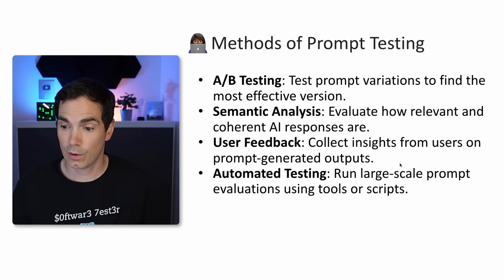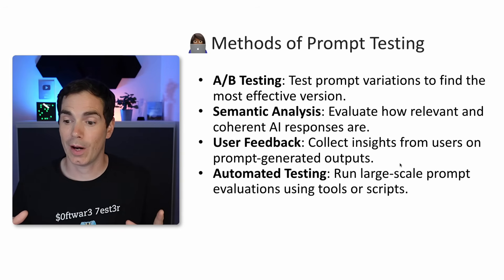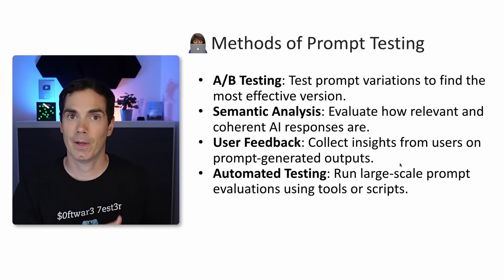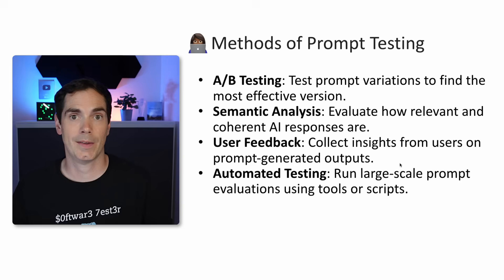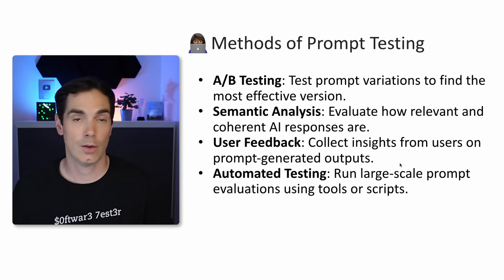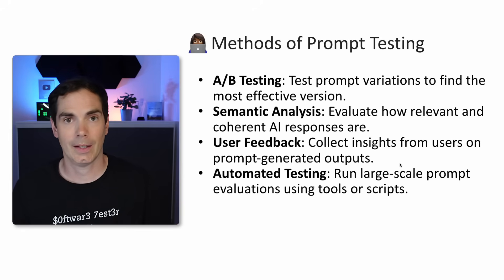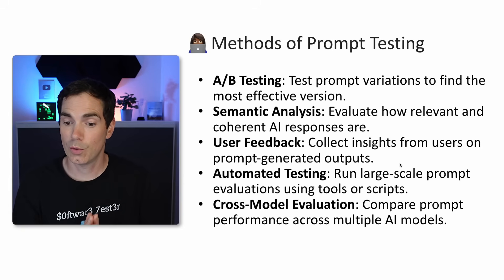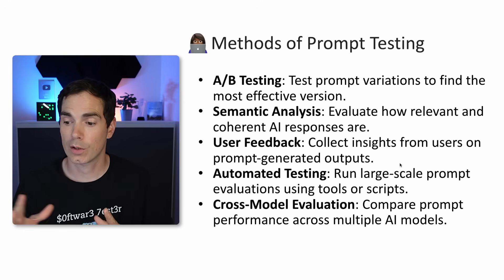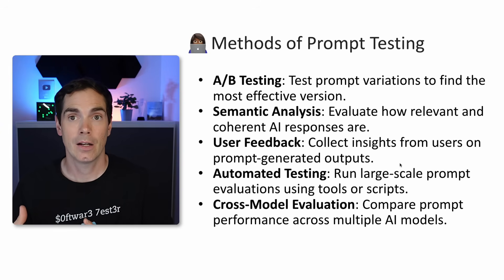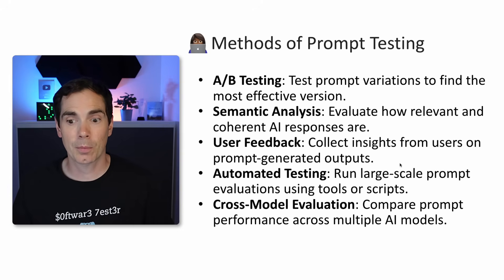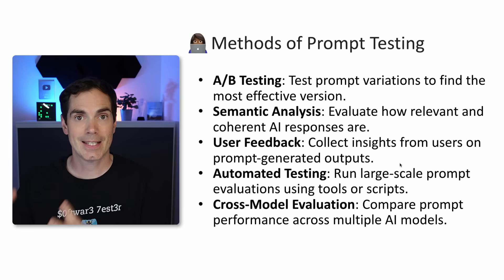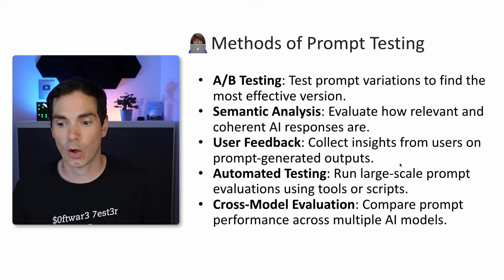Automated testing: run large-scale prompt evaluations using scripts. Fire up hundreds of prompts to your LLM in an automated scripted way to see what's the best performance in terms of speed and output quality. And then cross-model evaluation: compare prompt performance across multiple AI models — not just how fast the LLM generates output, but what the result of the generated text or code actually looks like.